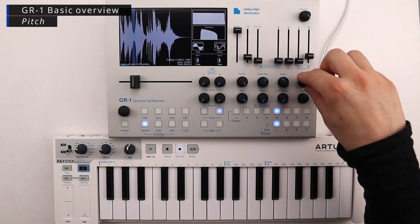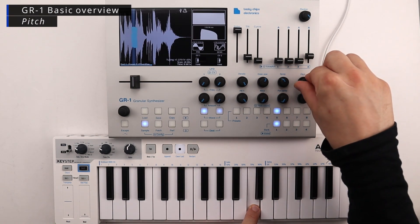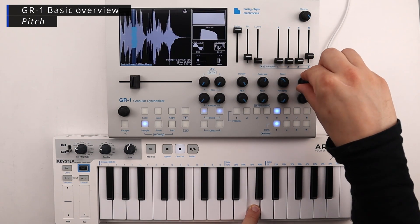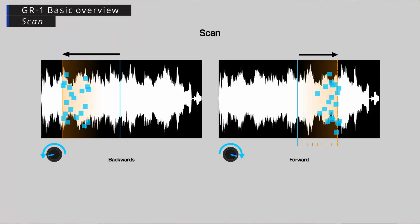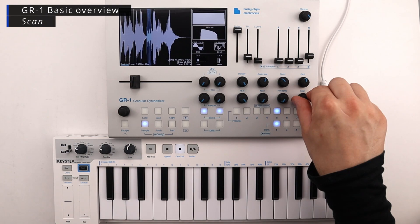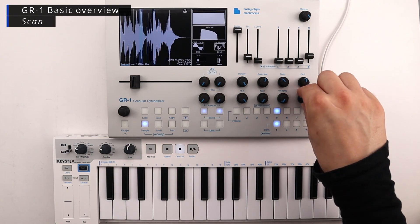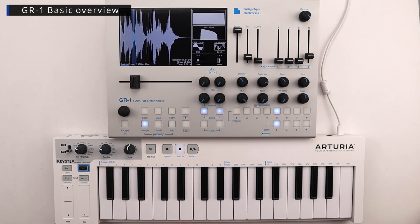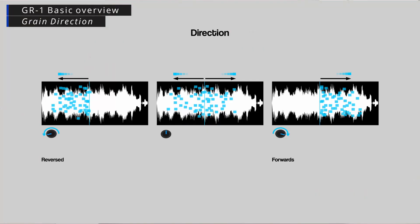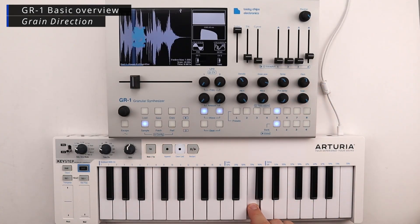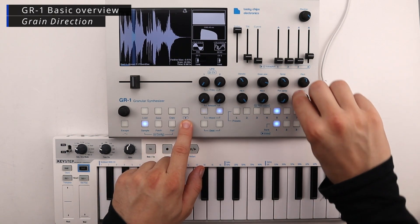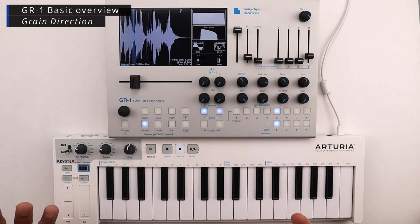The pitch parameter will adjust the overall pitch of the sound. The scan parameter behaves like an extra position which can scan automatically in a forward or backward direction at a given speed. Using shift and scan you can adjust the direction parameter. This allows you to set the direction of the grains themselves. Grains can move in a forward direction or in a backward direction from the start position, or a mixture of both which can be set to any percent.